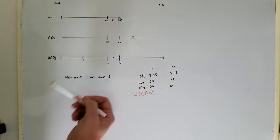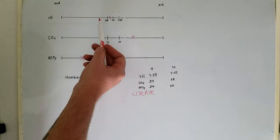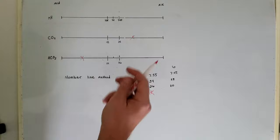That's what this 7.4 line is. If this was over here like this, then you could see that it would be metabolic acidosis and that the respiratory system is trying to compensate for it.